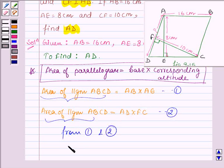From 1 and 2 we have the right hand sides also equal that is AB into AE is equal to AD into FC.